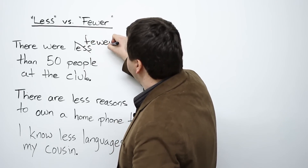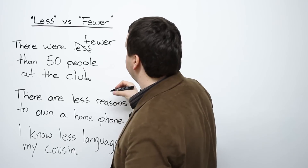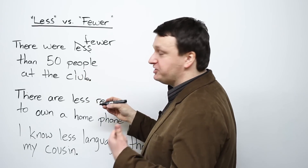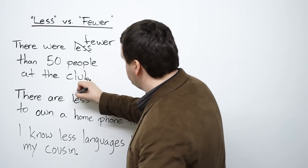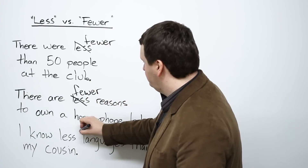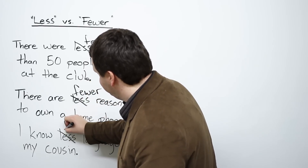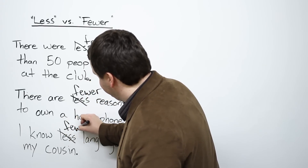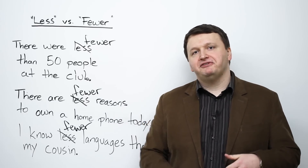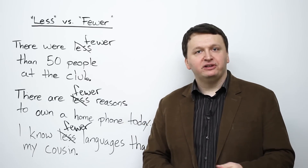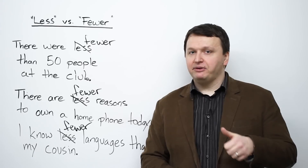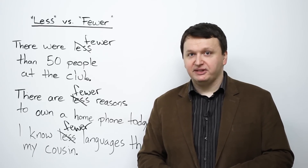I know this is a mistake I hear commonly, especially with relation to people — 'less people'. You should actually be saying 'fewer people', 'fewer reasons', 'fewer languages'. So remember: if it's plural, it's countable — think 'fewer'. If you can count it, it's plural: fewer. Now let's move on to number three.